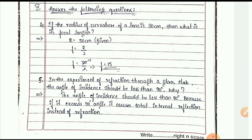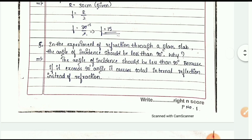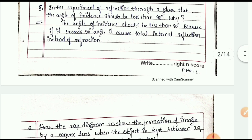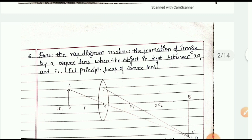The next question: in the experiment of refraction through a glass slab, the angle of incidence should be less than 90 degrees. Why? Because if it exceeds 90 degrees, it causes total internal reflection instead of refraction.